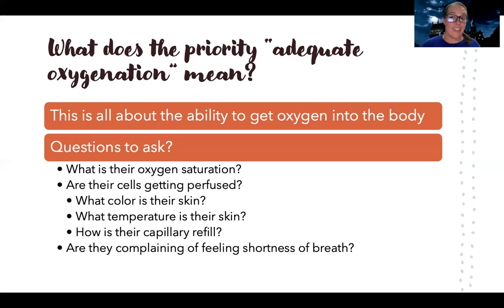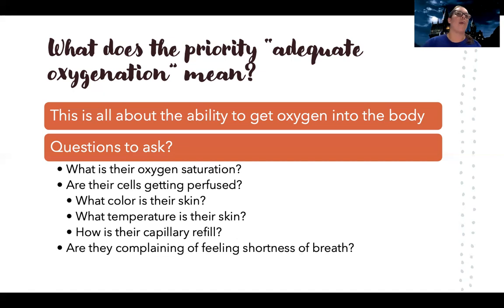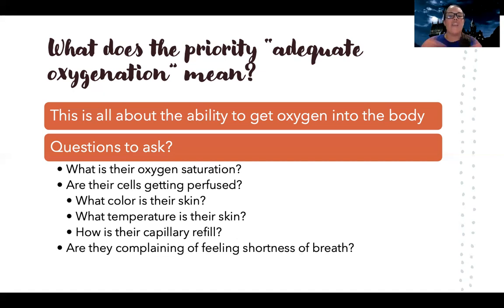The fingers and toes are the first to lose their oxygen supply, because the heart and brain take priority. Look for signs of perfusion and ask if they're complaining of shortness of breath. When you think about who has a priority of adequate oxygenation, think of people with problems getting oxygen in — like pneumonia, where there's so much debris from bacteria, virus, or fungus filling the lower lungs.